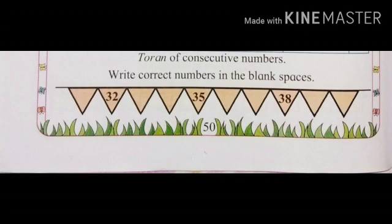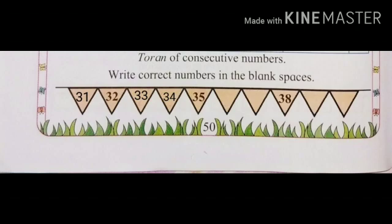Consecutive numbers — write correct numbers in the blank space. Numbers 32, 35, and 38 are given. Before 32: number 31. After 32: 33. After 33: 34. After 34: 35. After 35: 36. After 36: 37. After 37: 38. After 38: 39. After 39: 40.